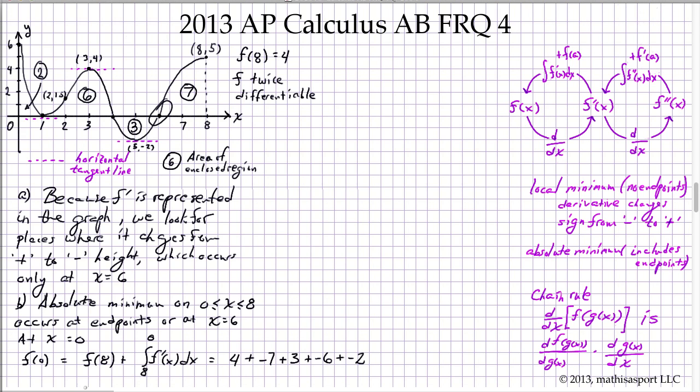So I get a total value for f(0) of 4 minus 7 is negative 3, plus 3 is 0, minus 6, minus 2. I get negative 8.